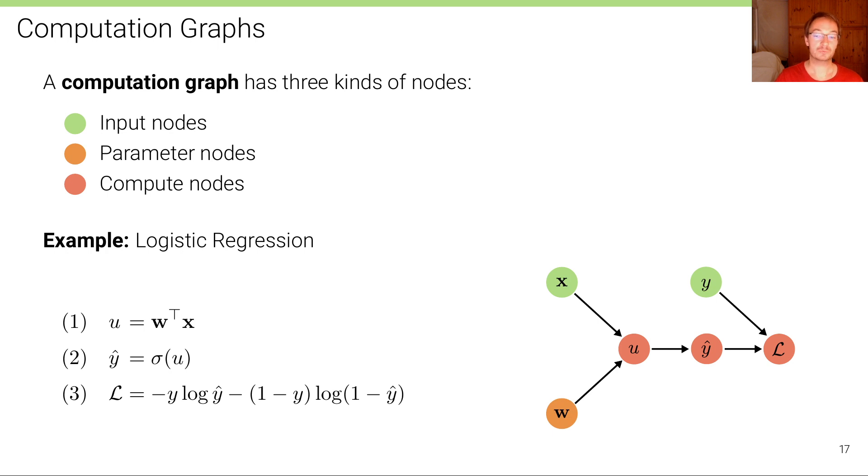We could also write this in terms of a weight vector w and an input vector x. So now we have simply replaced these two scalars with a weight vector, and we have to replace this x with a vector, for instance 1 and x1, to incorporate the bias. When we work with the educational framework, we will work with vector operations, so we'll always consider this kind of setup.